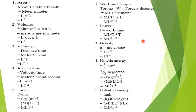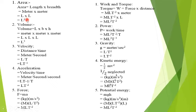The first dimension is area. Area is length into breadth. We measure the length with symbol L, and the breadth also has symbol L. Since the base is the same, we add the powers and it becomes L squared.